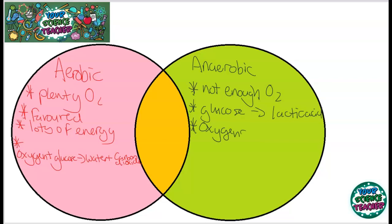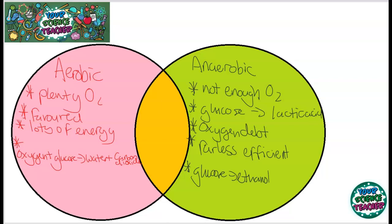Oxygen debt is the amount of time needed to break down the lactic acid in your body — when you react oxygen with the lactic acid, it breaks it down. Anaerobic respiration is far less efficient; it doesn't create as much energy as aerobic respiration. In plants, it has a different word equation: it converts glucose into ethanol and CO2. This is what's actually used in the fermentation industry in order to produce alcohol — they use this equation with yeast.